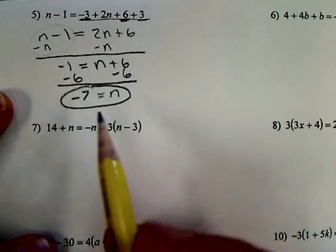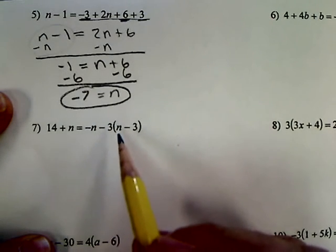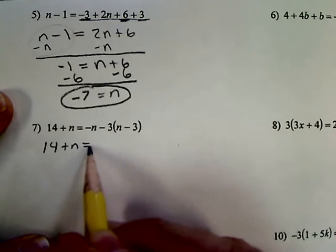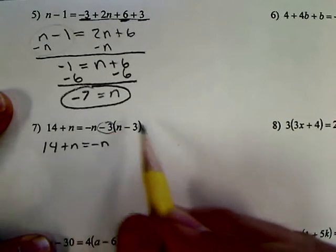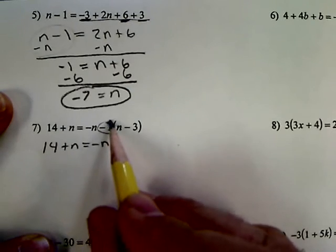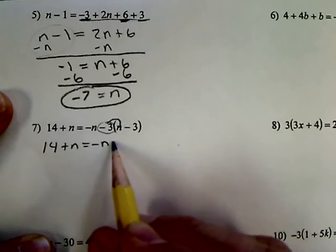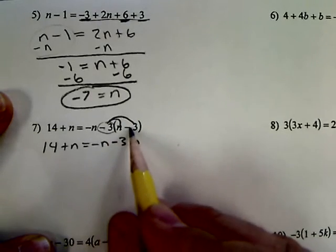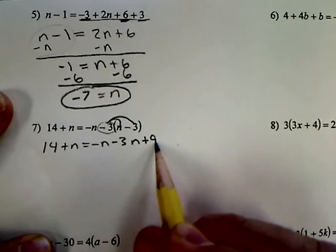Now down here, I have parentheses. I need to get rid of those first. So I still have a 14 plus n equals negative n. So I have to multiply that to each one of these guys. Distributive property, negative 3n, negative times a negative, negative times a negative, is a positive 9.